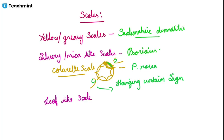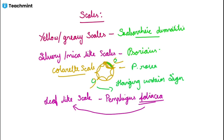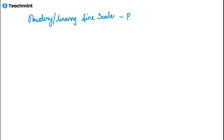Leaf-like scales are seen in pemphigus foliaceus — 'foliases' means leaf, so the morphology is named based on the lesion. Next, powdery or branny fine scales are seen in pityriasis versicolor.